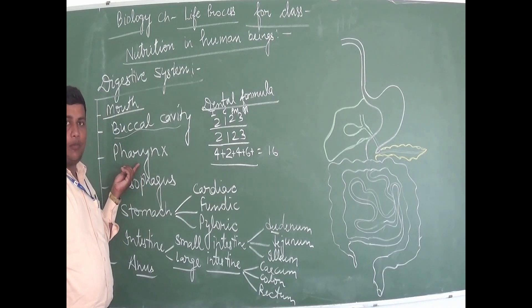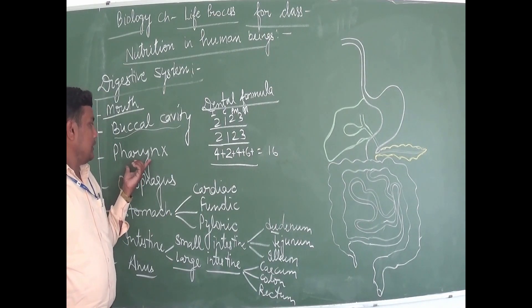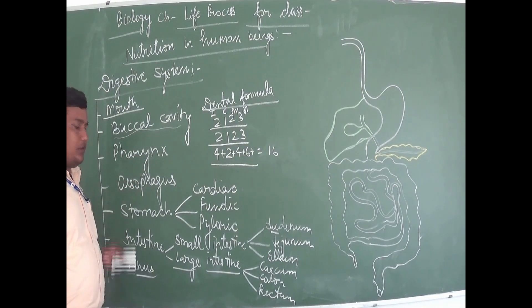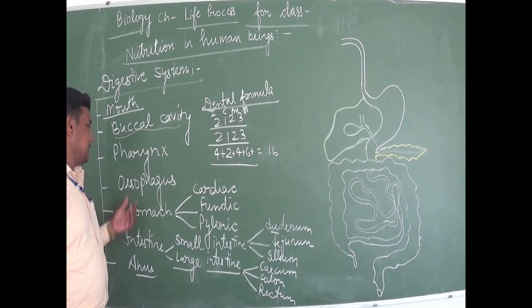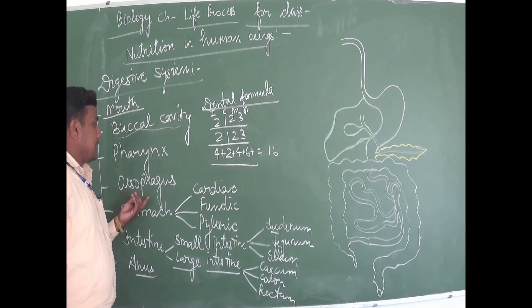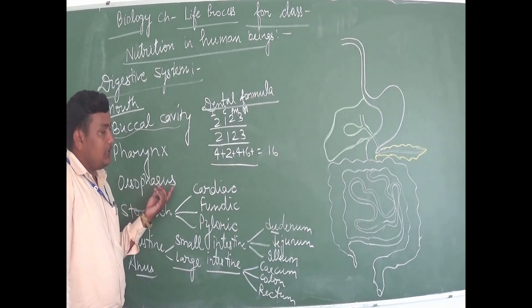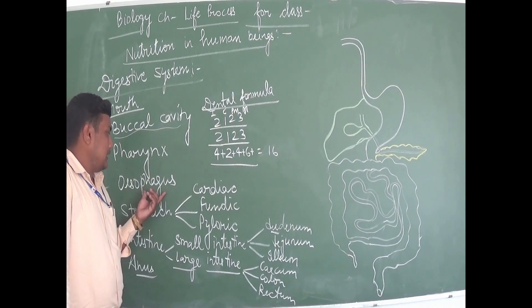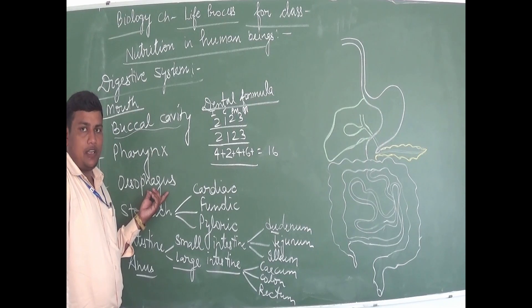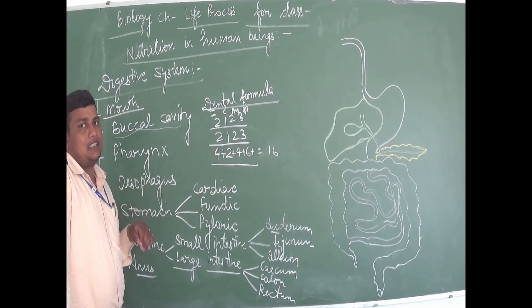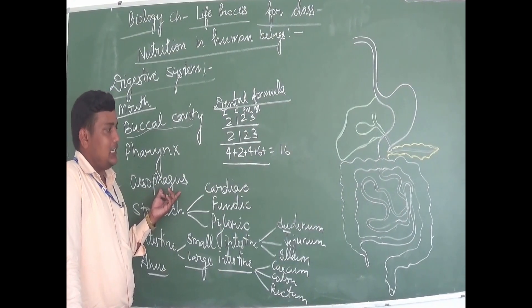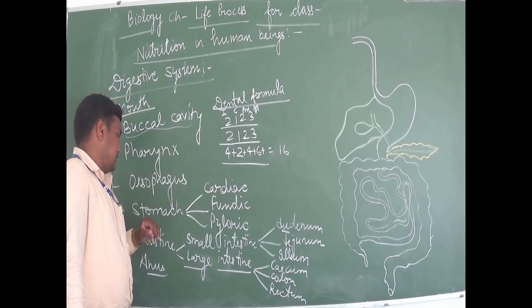Pharynx is the common passage for food and air. Next is the esophagus, a tube-like structure. After physical digestion, food passes from the buccal cavity to the stomach through the esophagus. The wall of the esophagus performs peristalsis movement, and due to this peristaltic movement, food enters the stomach.